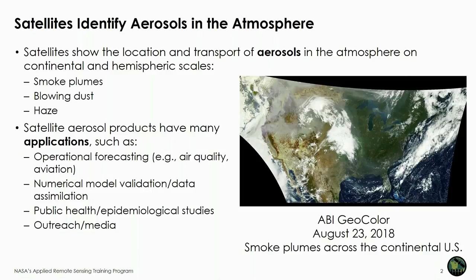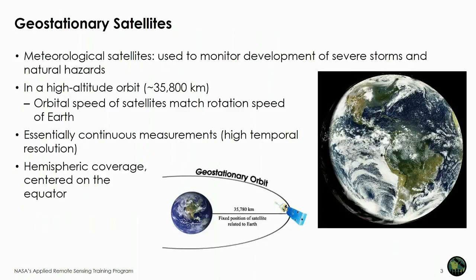This is a geocolor image, and I'm going to talk in much more detail about the types of images and data we can get from the ABI. This is just an example showing the real strength of the satellite imagery — you can get this larger scale information. Satellite aerosol products have many applications, including operational forecasting, ambient air quality, and aviation related to visibility from aerosols. They're also used in numerical models for both validation of model output and data assimilation. Public health and epidemiological studies often use satellite data because they give a regional view, whereas surface measurements have a more sparse distribution.